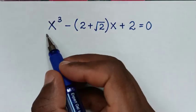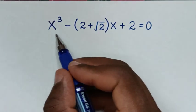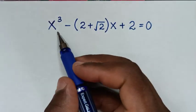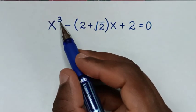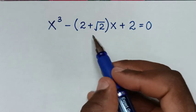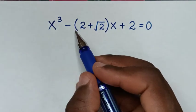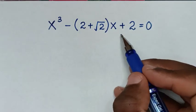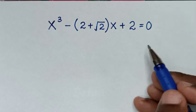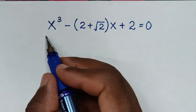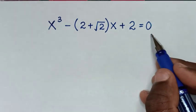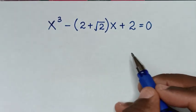Welcome. We are going to solve the math problem: x³ minus (2 plus square root of 2) bracket times x plus 2 equals 0, to find the values of x from this equation.